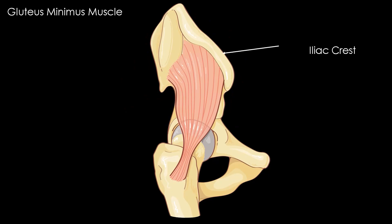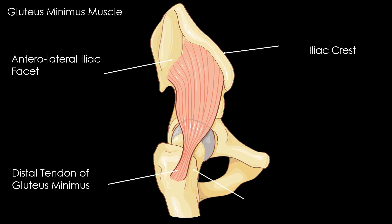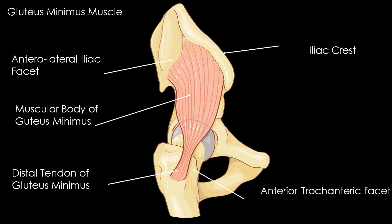The gluteus minimus muscle is the deepest and most anterior of the gluteal muscles. Its origin is the anterolateral aspect of the iliac bone in front of the anterior gluteal line, the anterior part of the iliac crest, and the anterior superior iliac spine. The muscle fibres converge down and out to form a triangular and flattened muscular body.